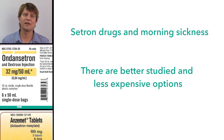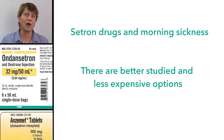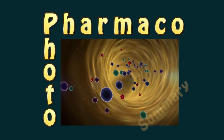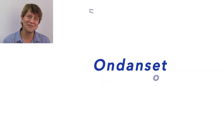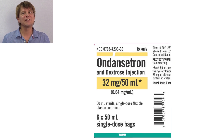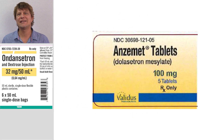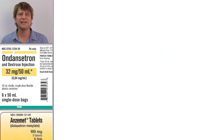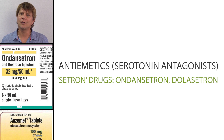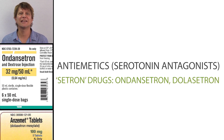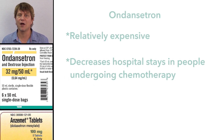Ondansetron has been used off-label for morning sickness, but it is pregnancy category B in the United States and B1 in Australia. Ondansetron, dolasetron, and other drugs ending in the suffix -SETRON are oral or intramuscular serotonin antagonists that decrease nausea and vomiting.